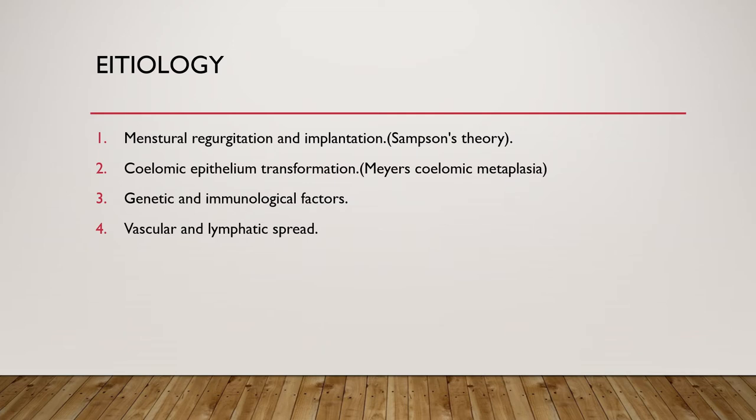The third theory is genetic and immunological factors. Some women are more susceptible to forming endometriosis, and certain conditions can trigger it through immunological factors. Endometriosis is more prevalent in first-degree relatives and in patients of oriental origin, and less prevalent in patients of Afro-Caribbean origin. The fourth theory is vascular and lymphatic spread, in which emboli of endometrial cells pass through lymphatic or vascular canals — explaining endometriosis in distant locations such as the pleural cavity, nasal passages, abdominal scars, and umbilicus.